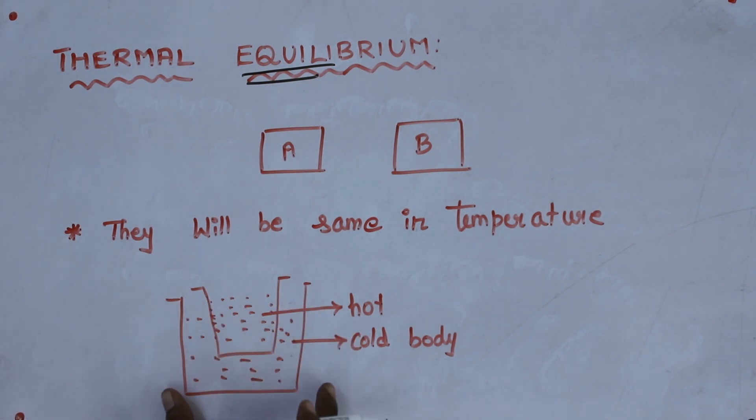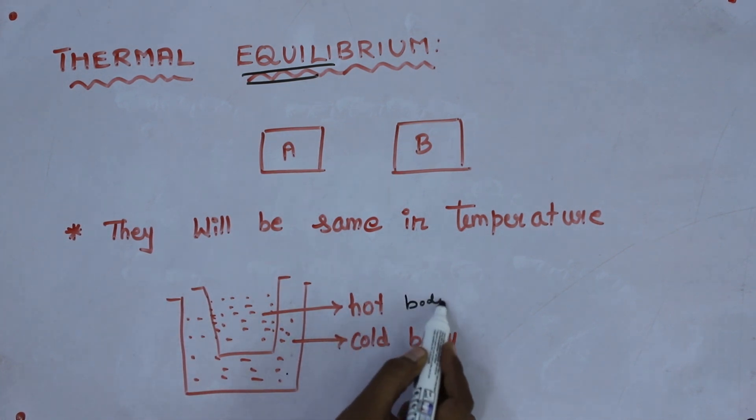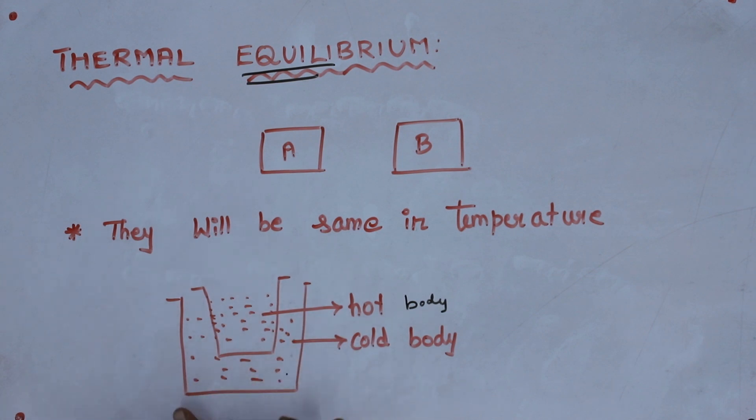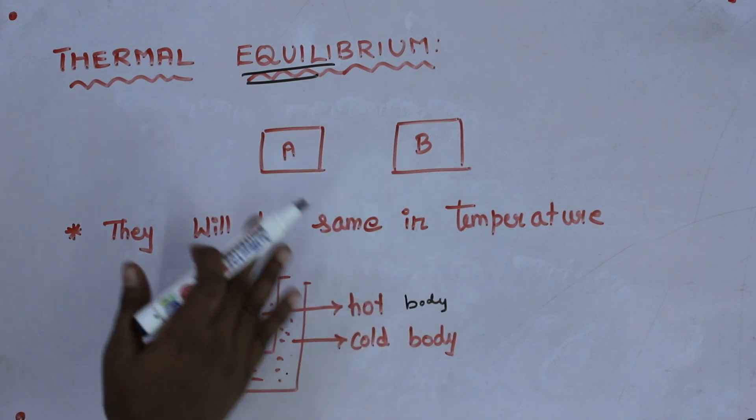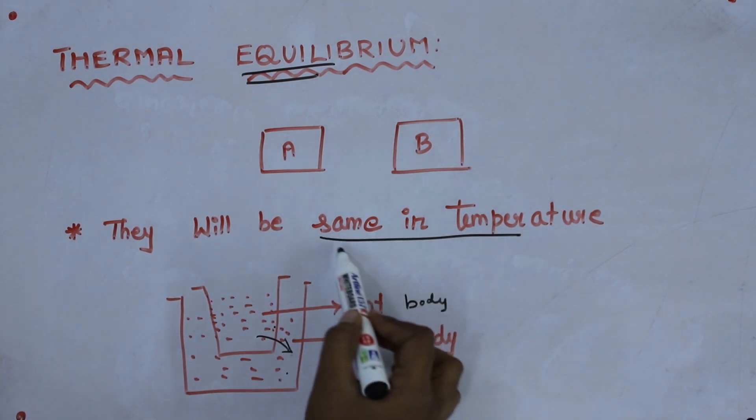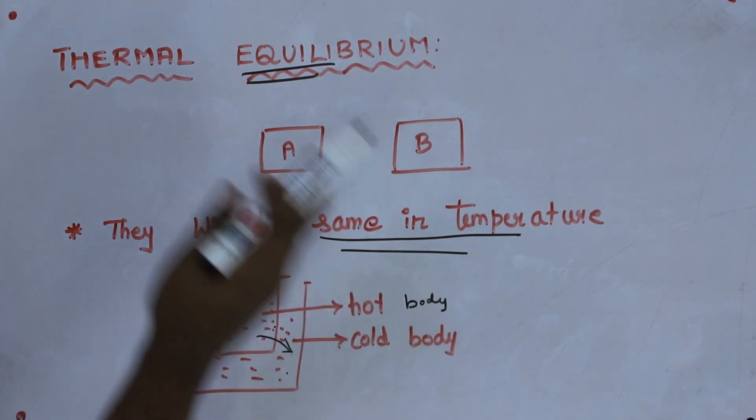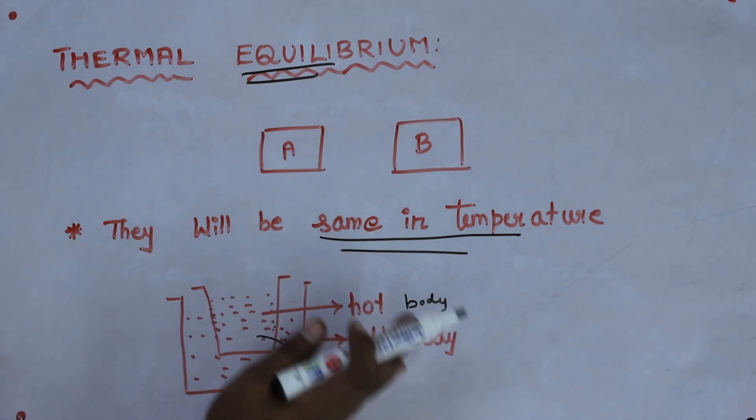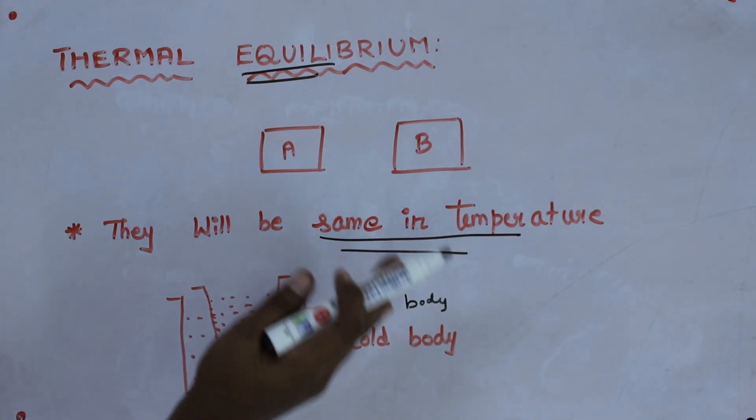I will give you an example. You consider two bodies. One is cold body and this is hot body. I am inserting the hot body inside the cold body. What will happen? Some heat energy is transferred from the hot body to the cold body. This process, the transfer of heat from the hot body to the cold body will continue until both the body will attain the same temperature. If both the body attains the same temperature, then we can say that they are in thermal equilibrium.